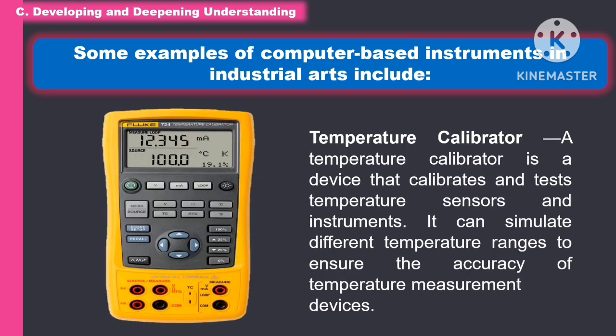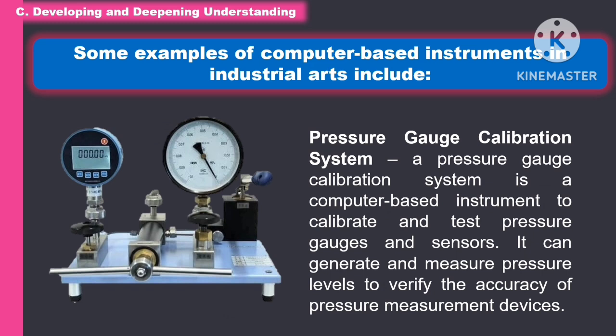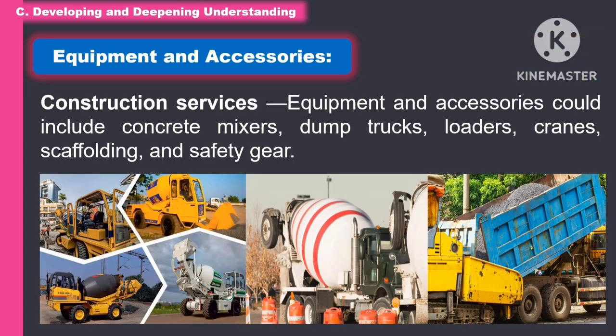Another example of a computer-based instrument is the temperature calibrator, a device that calibrates and tests temperature sensors and instruments. It can simulate different temperature ranges to ensure accuracy of temperature measurement devices. Another example is the pressure gauge calibration system, a computer-based instrument used to calibrate and test pressure gauges and sensors. It can generate and measure pressure levels to verify the accuracy of pressure measurement devices.